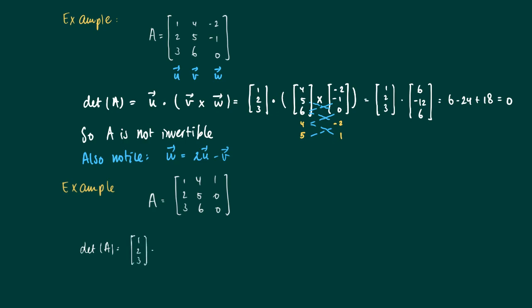Now the determinant of the matrix A is the inner product of [1, 2, 3] with the cross product of [4, 5, 6] and [1, 0, 0]. So now we get the vector [1, 2, 3] and the cross product is [0, 6, -5]. So we get as a result 12 minus 15 equaling -3, which is non-zero. So this matrix A is invertible.